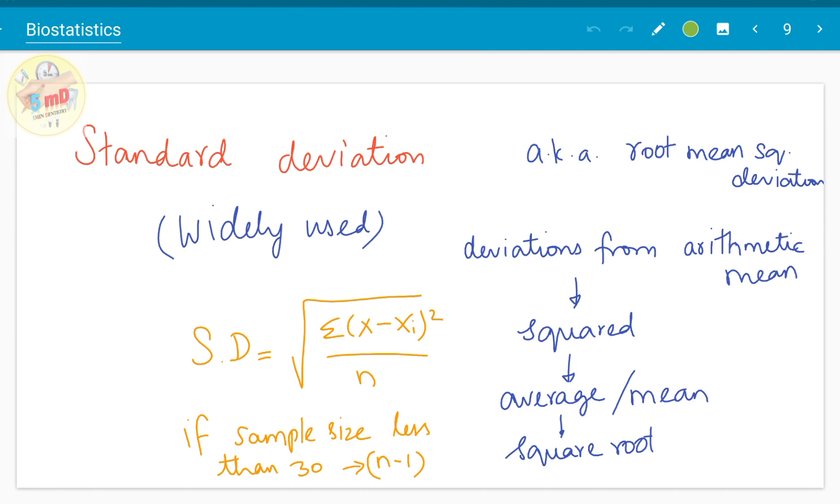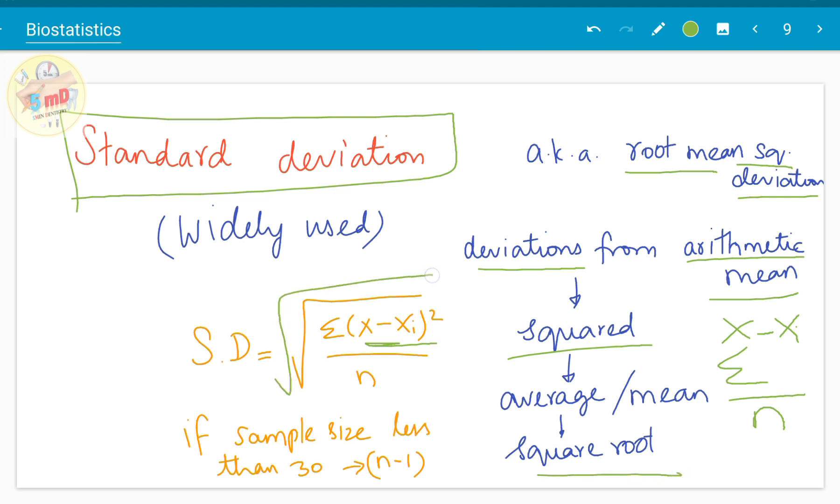The last one and most commonly used measure of dispersion is standard deviation. It is also known as root mean square deviation. I'll explain how it is calculated. First, we have to find out the deviations from the arithmetic mean. If x̄ is the arithmetic mean, deviation from arithmetic mean for a particular value is x̄ minus xi. How far it is located from mean we can find out by subtracting the observed value from the mean. You have to square it, then find out the average—sum up all the observations and divide it by n. That is the average, and find the square root of that.